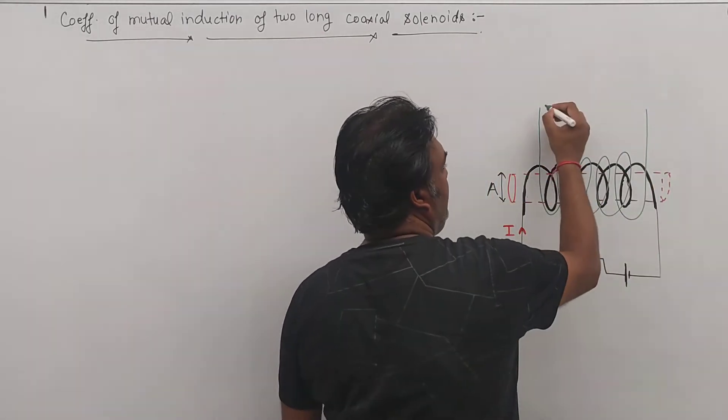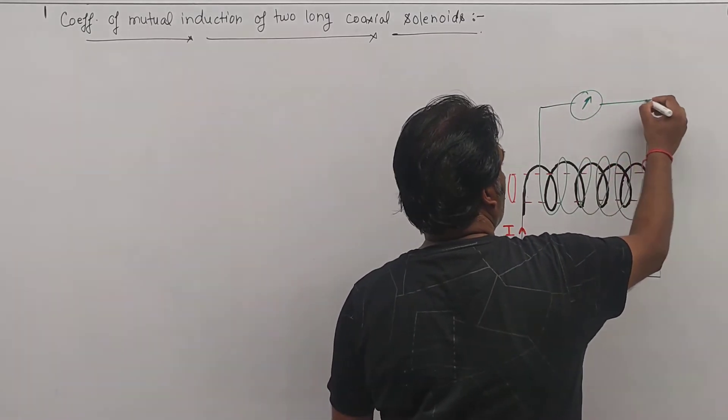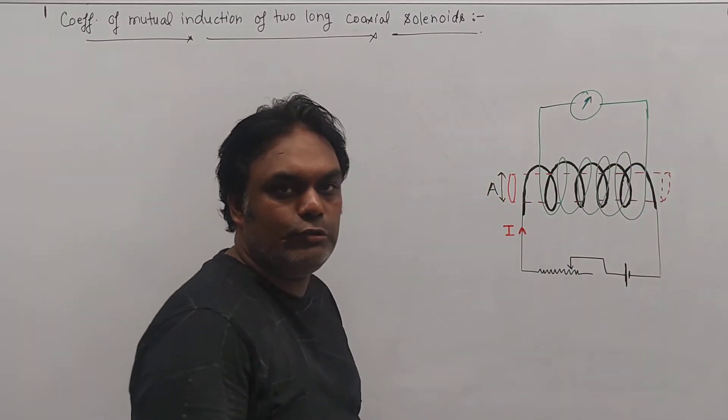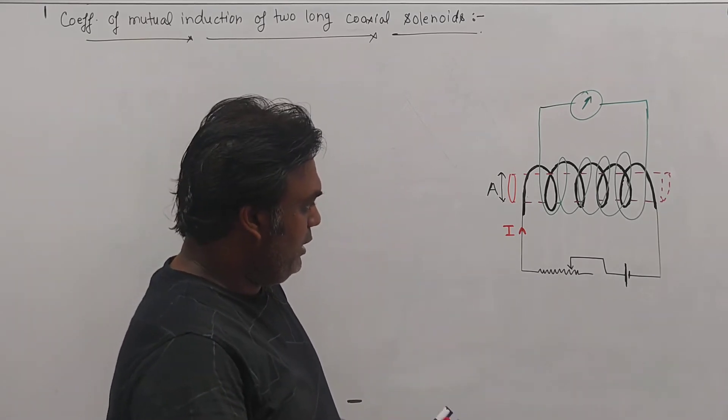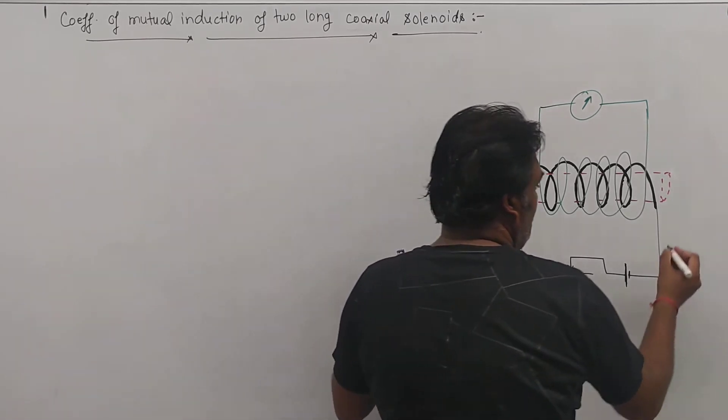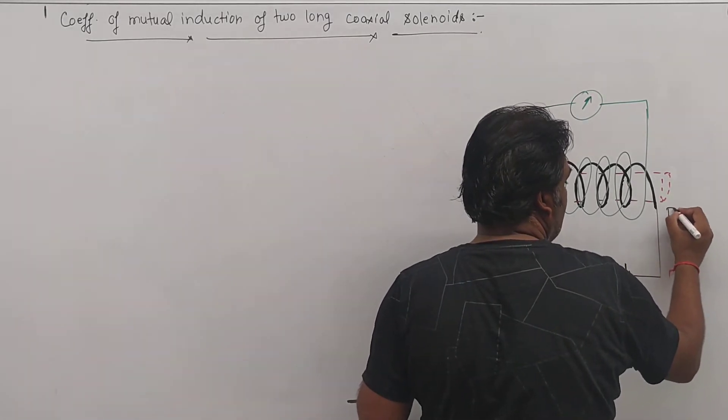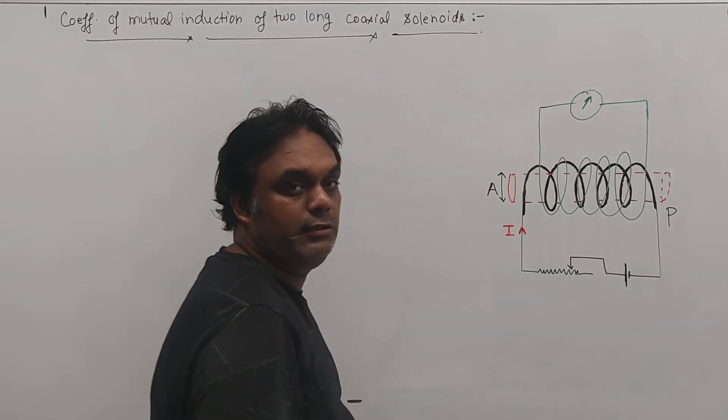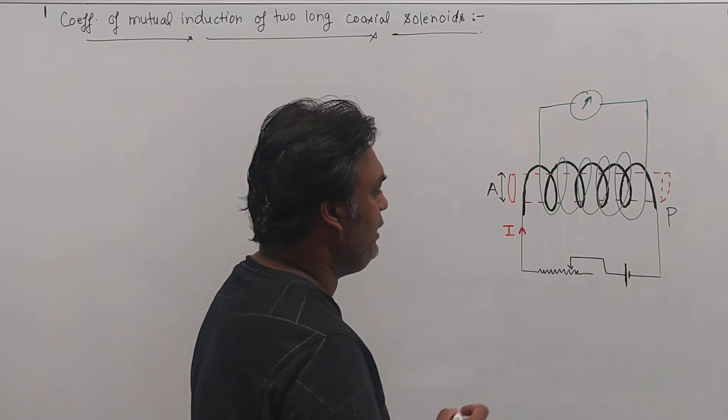...turns in this way and here if we put a galvanometer, that is, no source of electrical energy. If you remember, where the potential is applied, that coil is known as primary coil.